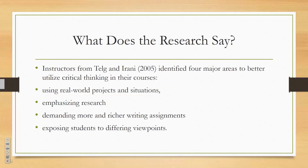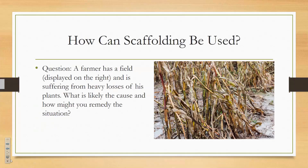What does the research say? Instructors identified four major areas to better improve critical thinking skills in their courses: broad divergent thought projects and real-world project situations; emphasizing current and modern research; demanding more and richer writing assignments — any way students can communicate verbally or in writing; and exposing students to differing viewpoints, because the only way to get a full picture is to see views outside your own.